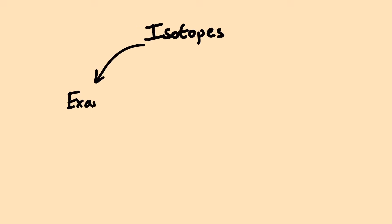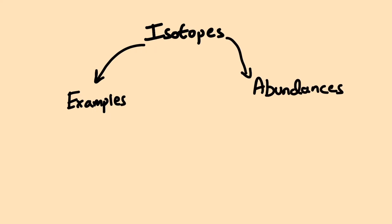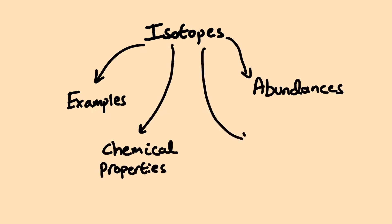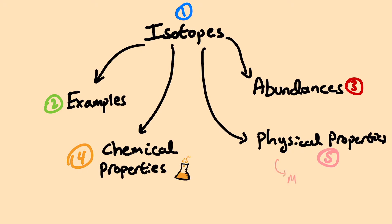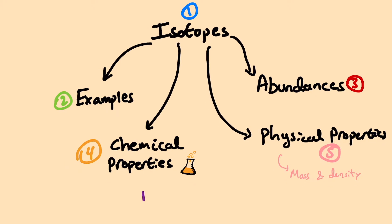In today's video, I'll be giving an overview on isotopes for A-level chemistry. I'll begin by defining what an isotope is, then we'll be providing a few examples and also talking about their abundances and how they exist in nature, before coming to their chemical and physical properties. Make sure to stick around and try the question at the end of the video, and hopefully by the end of this, you'll have understood the basics of isotopes for A-level chemistry.